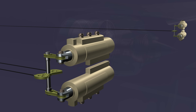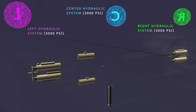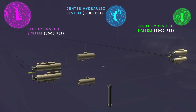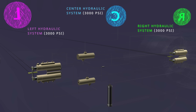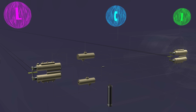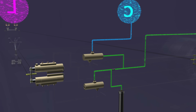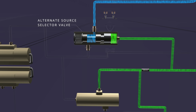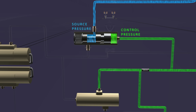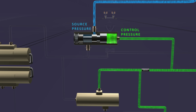Before understanding the metering valve functions, we need to understand the hydraulic line connections. The aircraft has three independent hydraulic systems. The right system powers the normal brakes of the aircraft, and the center system powers the alternate brakes. When both systems are available, the right system operates the alternate source selector valve. For the selector valve, the center system pressure is the source pressure, and the right system pressure is the control pressure. The right system pressure acting on the larger piston area closes the valve and depressurizes the alternate system lines.